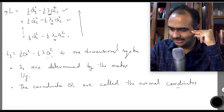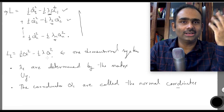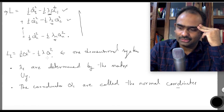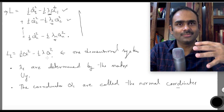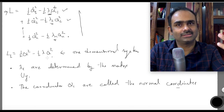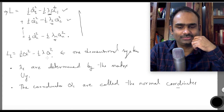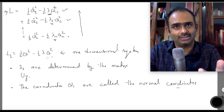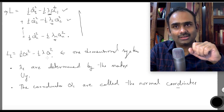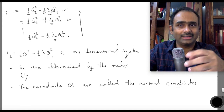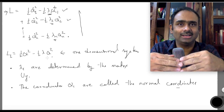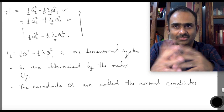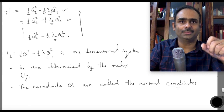We will continue next time with more details, but you can already start imagining the following. You can choose to set your system in motion such that not all the normal coordinates are moving — only one of them starts moving while all other coordinates stay put. This way you can isolate the motion of one oscillator: you can choose to excite one of the oscillators while keeping all other oscillators silent. We will talk about these things in more detail in the next video.